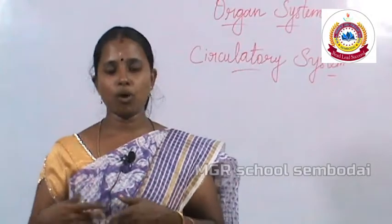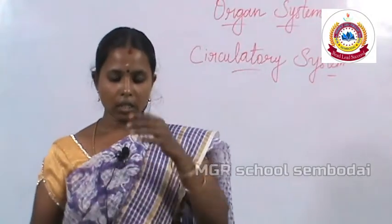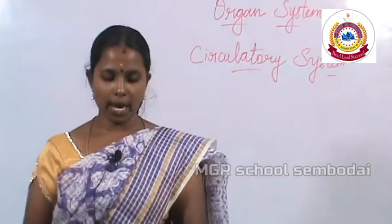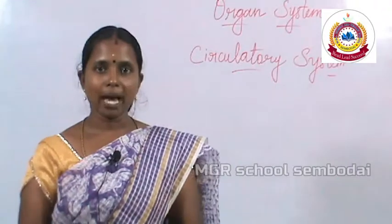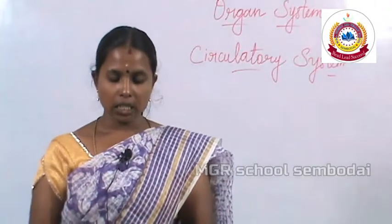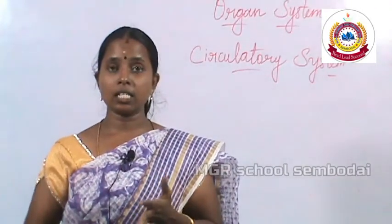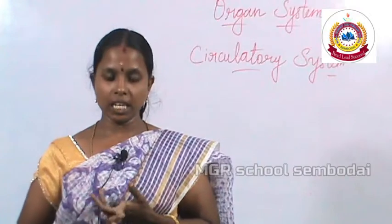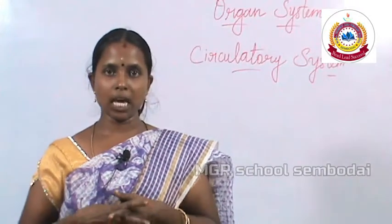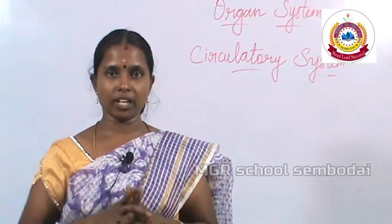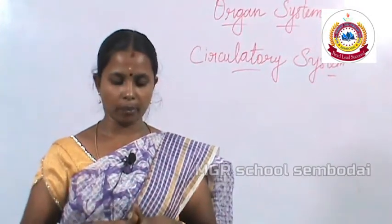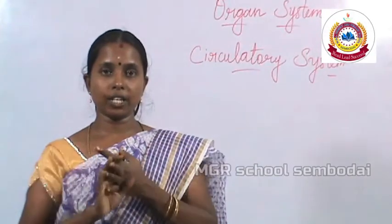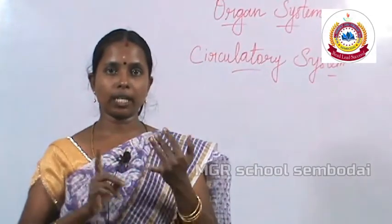Next is the excretory system. The excretory system removes waste from our body and also regulates water and electrolyte balance. The kidneys, lungs, liver, and skin together function as the excretory system. The excretory organs are the kidneys and urinary bladder.